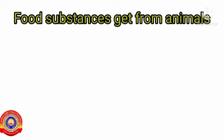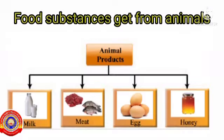Tell me dears, what are the food substances we get from animals? Yes, we get milk, meat, egg, honey, etc. from animals, right?